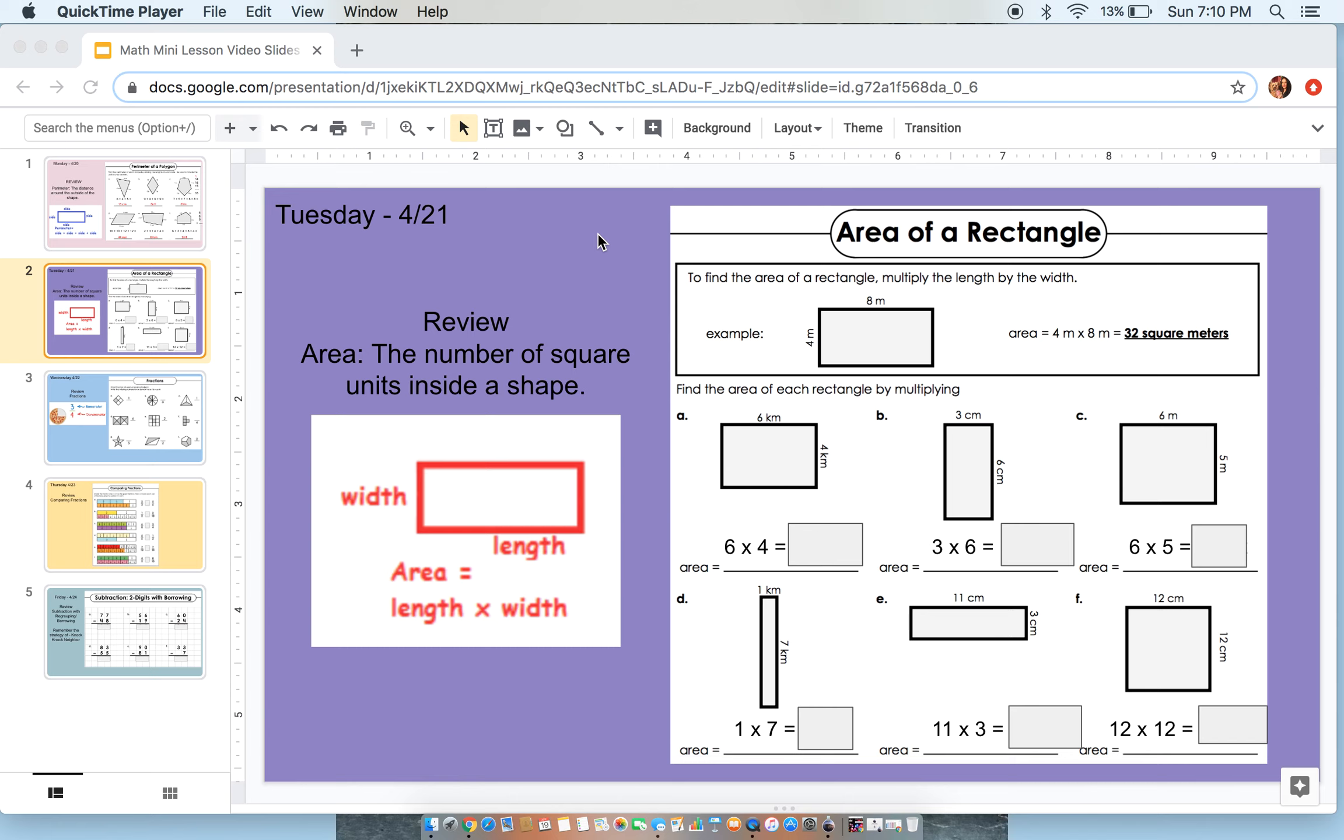So when we think of area, we want to be thinking about the number of square units inside of a shape. When we are working on area problems, we are going to be looking at two very specific things: the width and the length. That is what is going to help us solve area problems. Length times width.